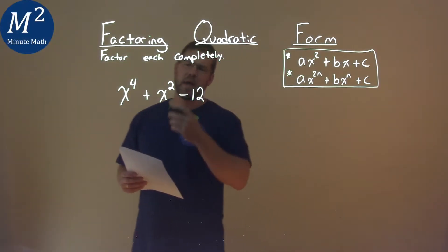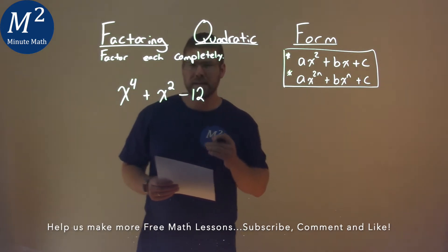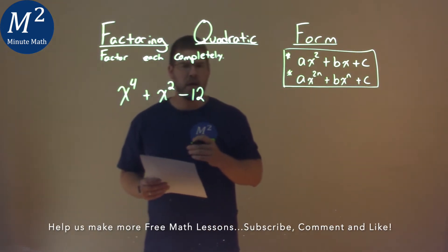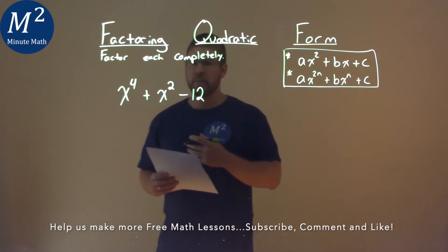We're given this problem right here, x to the fourth power plus x squared minus 12, and we need to factor completely. Notice it's kind of in a quadratic form here.